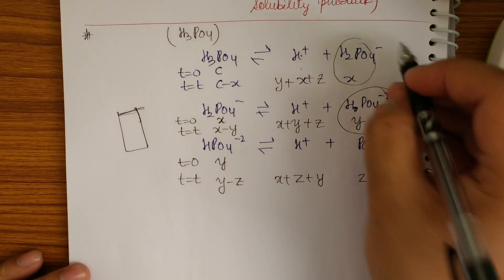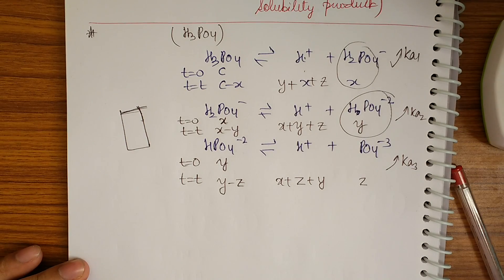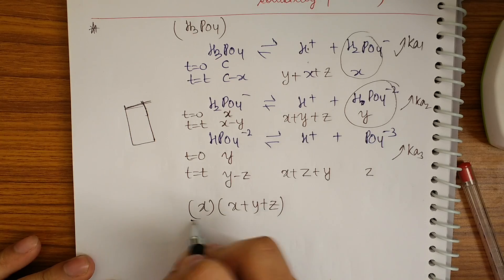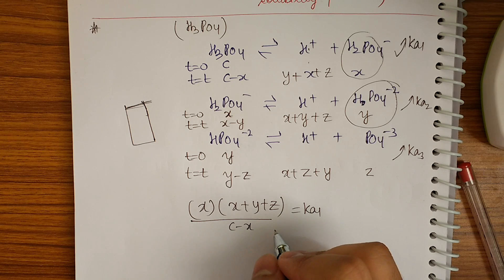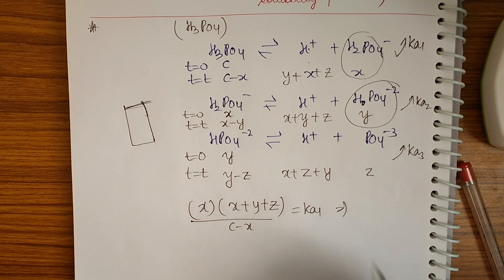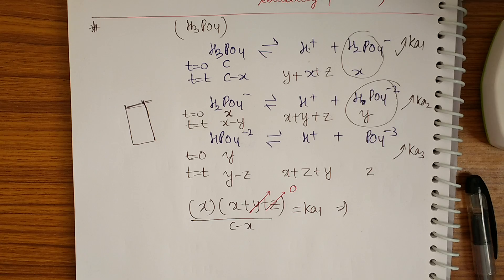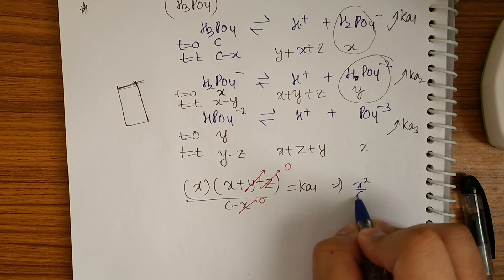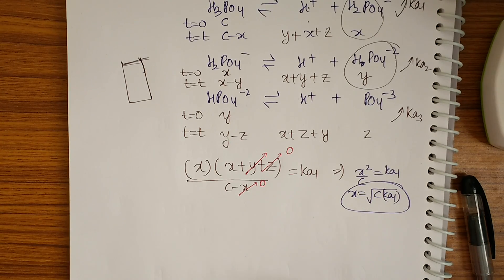In the question, Ka1, Ka2, and Ka3 will be given. Applying Ka1 for H₃PO₄: x·(x+y+z) / (c−x) = Ka1. Since y and z are negligible compared to x, and x is negligible compared to c, this simplifies to x² / c = Ka1, giving x = √(c·Ka1).